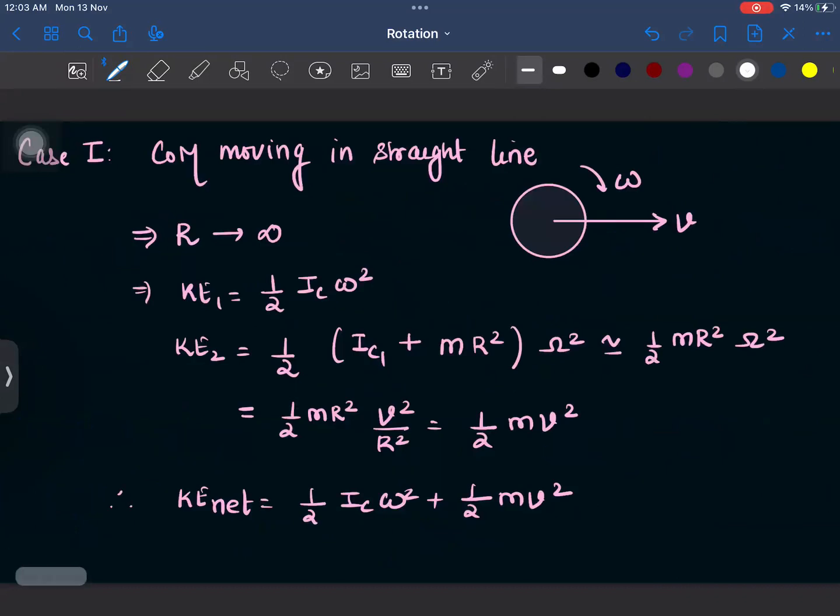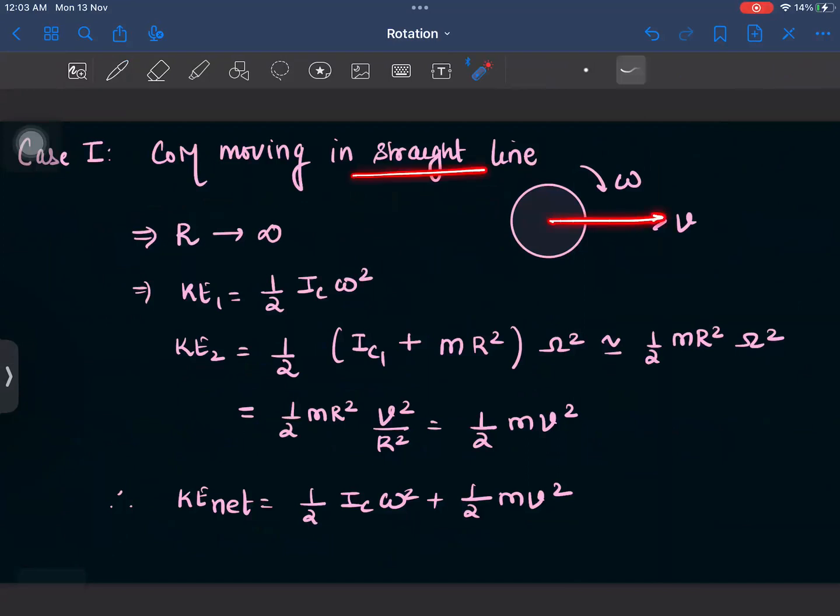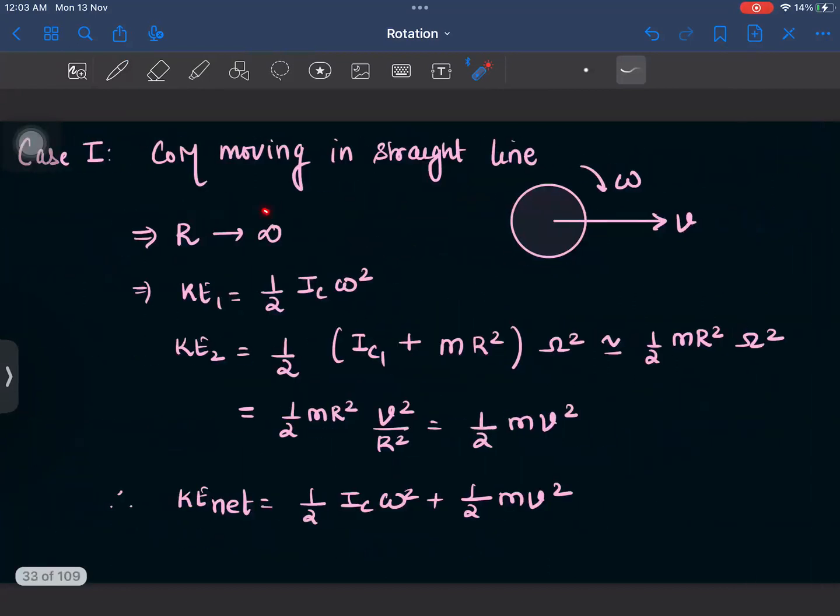Now students, let us take a very special case. Imagine a simple case of a general motion where the particle is not moving in a circular path as I have taken before, but it is moving in a straight line. A very innovative way to approximate a circle into a straight line is by taking the radius of that circle to be approaching infinity. Now in that case, first kinetic energy will remain as it is because the spinning is happening about this axis. But the second kinetic energy, that is half IC1 plus MR square omega square, will become half MR square omega square because this term will be exceptionally large as compared to this term. So this term can be neglected.